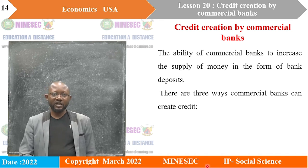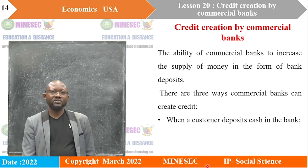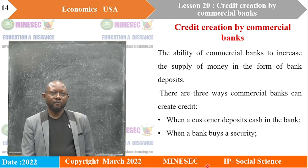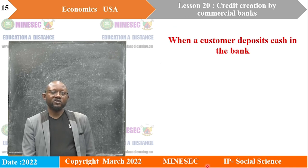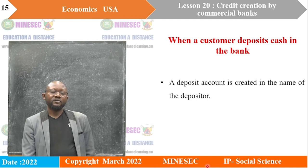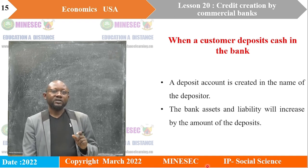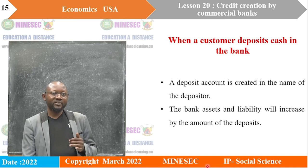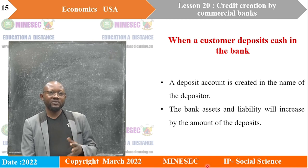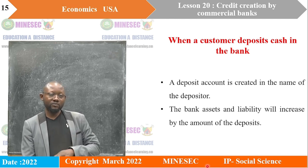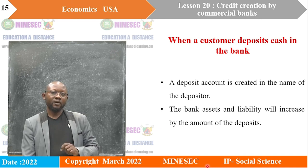There are three ways through which credit creation can be done: when a customer deposits cash in the bank, when a bank buys a security, and when the bank grants a loan. Let's start with when a customer deposits cash in the bank. A deposit account is created in the name of the depositor, and the bank's assets and liabilities will increase by the amount of the deposits. In real terms, money has just been transferred from cash to bank deposits at this initial stage.